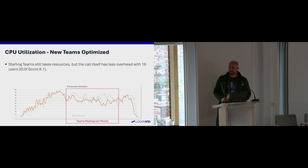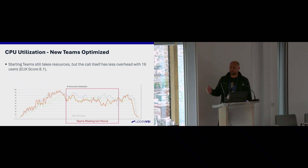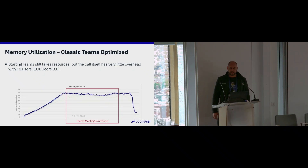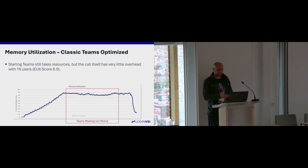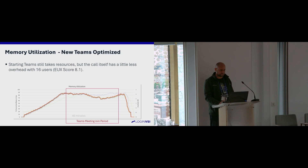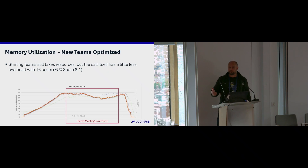With new Teams optimized and offloading, we have the same number of users. But you can actually see new Teams is a little bit lower on the CPU, which is good news because it'll be cheaper in the cloud. On memory utilization, comparing Classic Teams optimized — you can see the window where we've joined the meeting — versus the new Teams client, we can see a memory reduction when we're offloading as well.